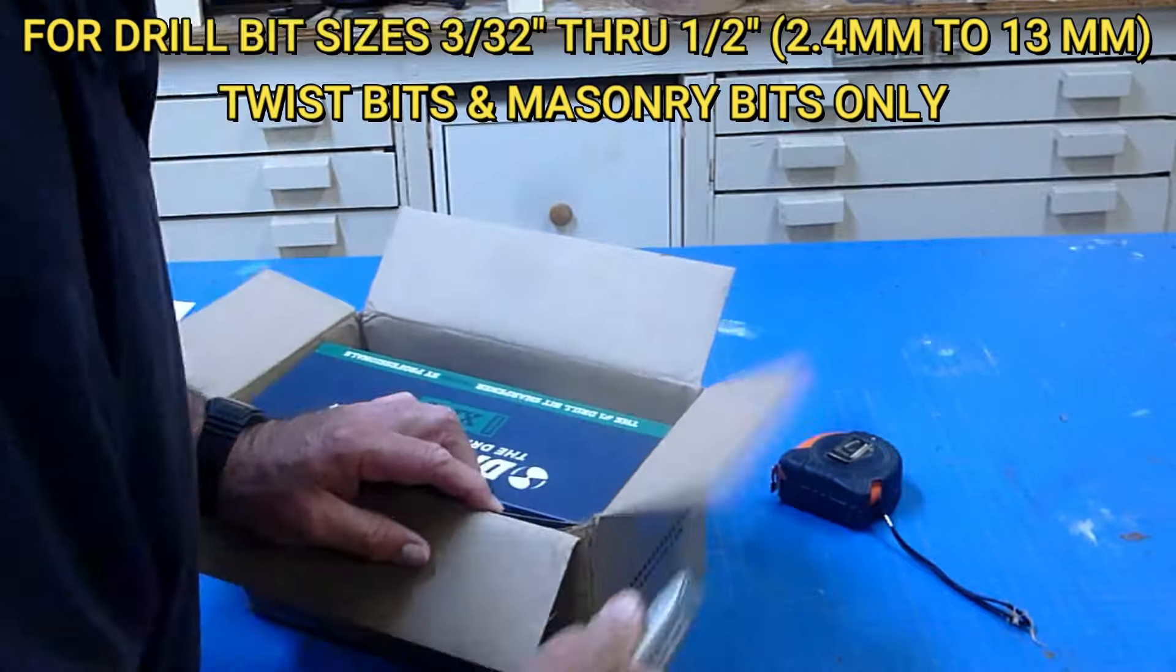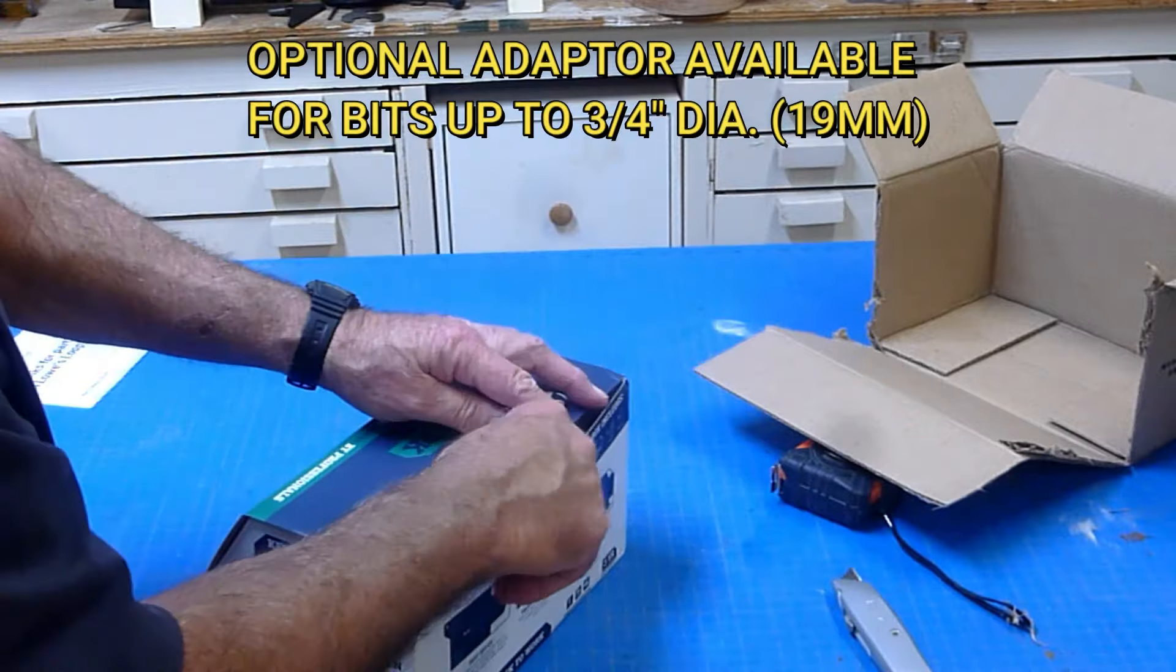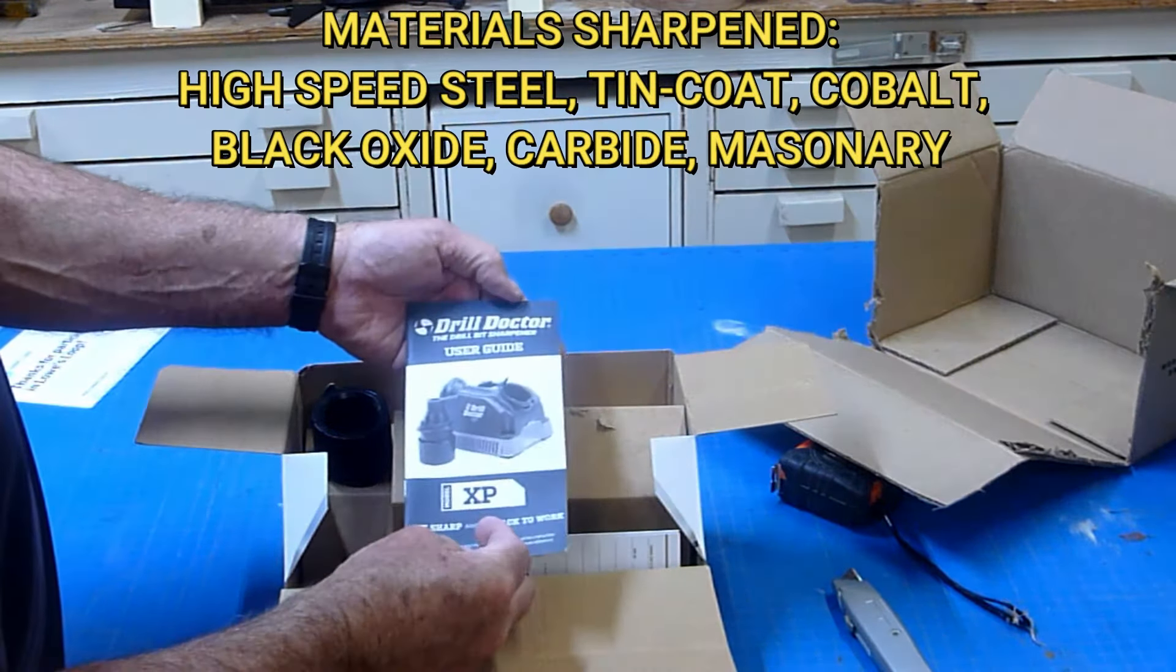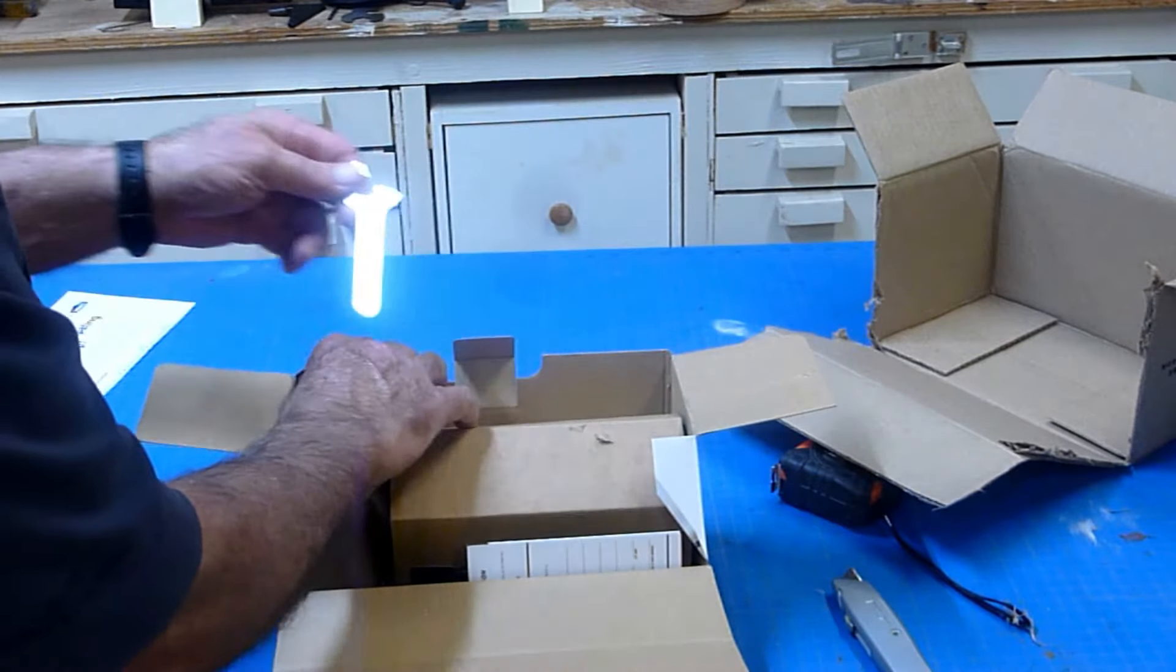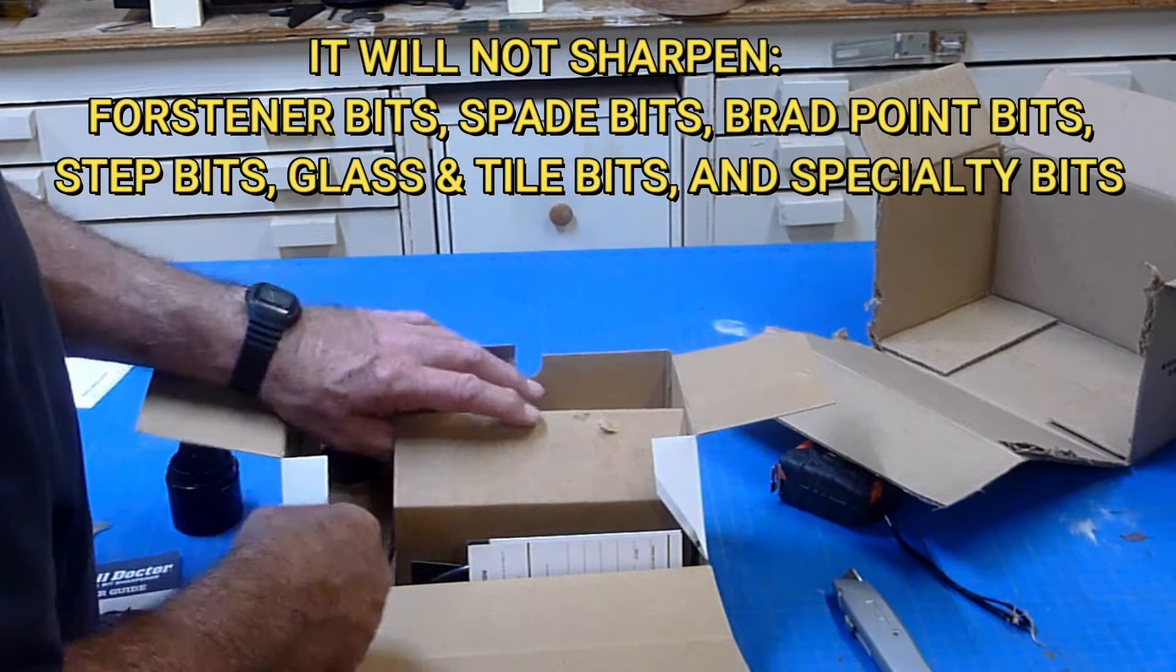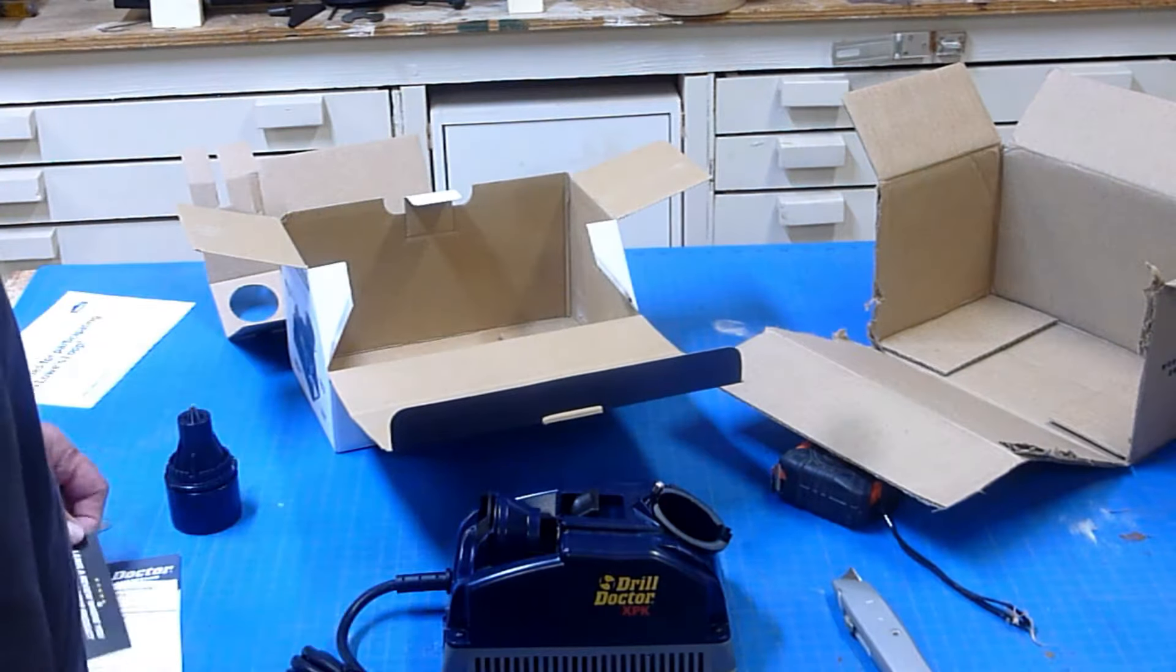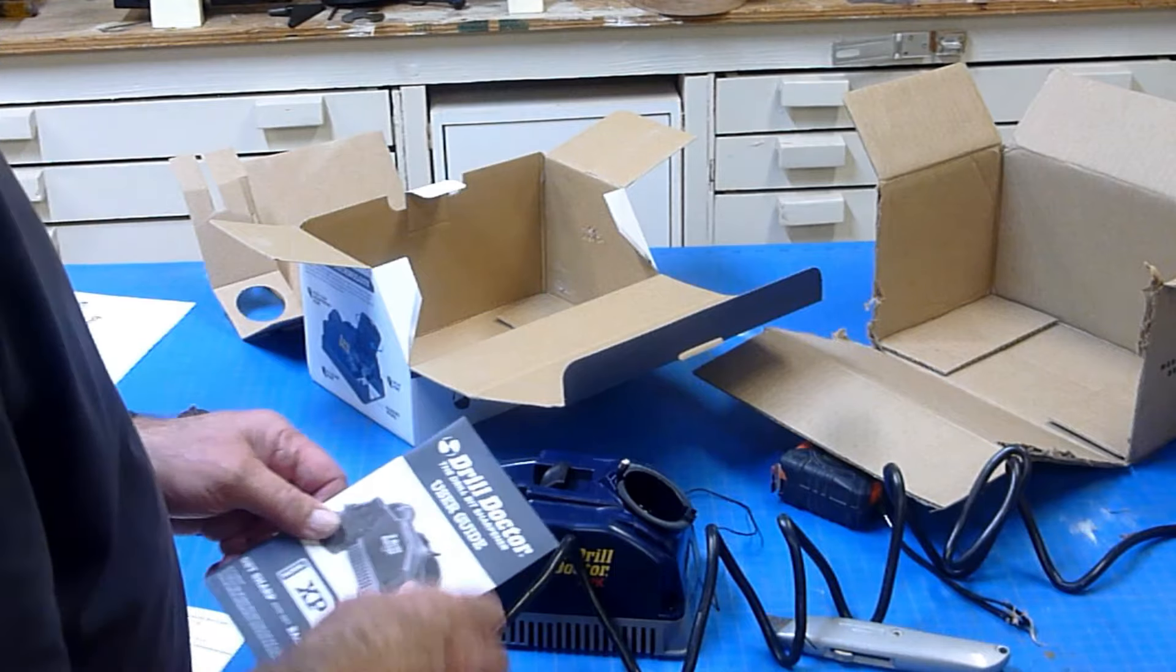The unit is designed to sharpen twist drill bits, either as a standard or a split point, and it will also do masonry bits. It will also sharpen a variety of drill point materials. It's not designed to sharpen spade bits, forstner bits, or brad point bits. It won't sharpen your chisels or your knives. It comes completely assembled, except there's a separate chuck and adjustment wrench, and of course all the paperwork including your manual, which is written entirely in English.